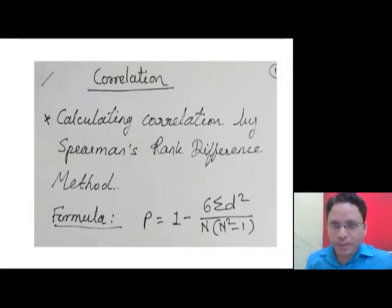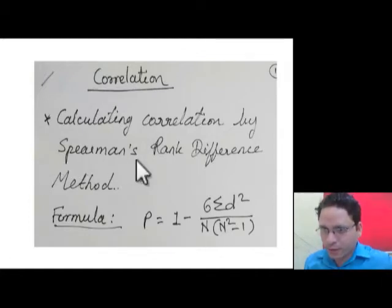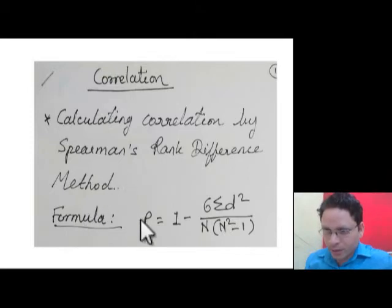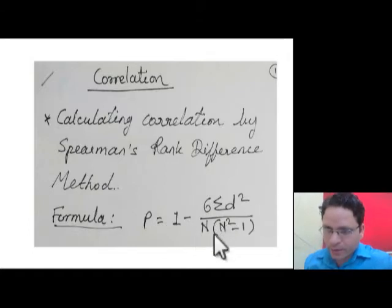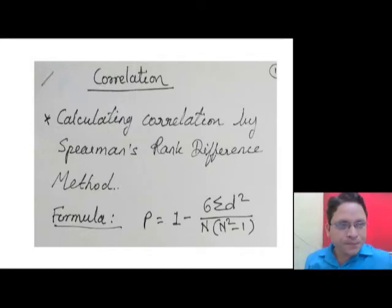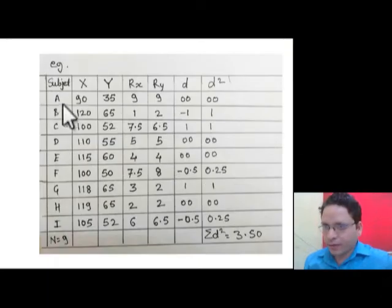There may be many methods of calculating correlation, but we are using the method called Spearman's Rank Difference Method. There is a formula given to calculate correlation by this method: ρ = 1 − (6 × Σd²) / (n(n² − 1)). This is the formula to calculate the correlation.